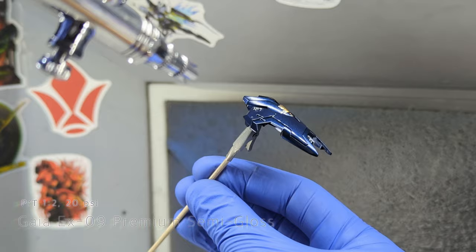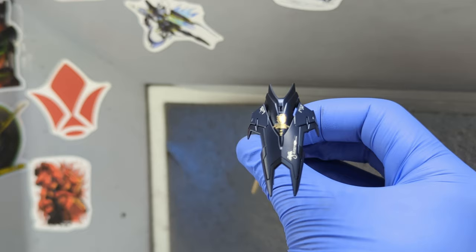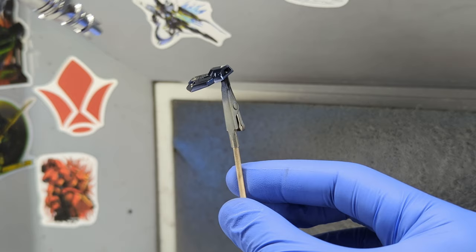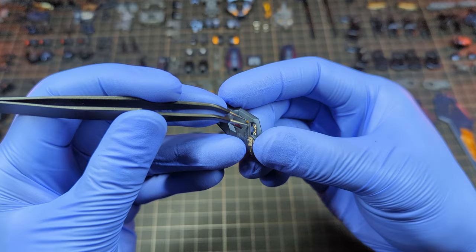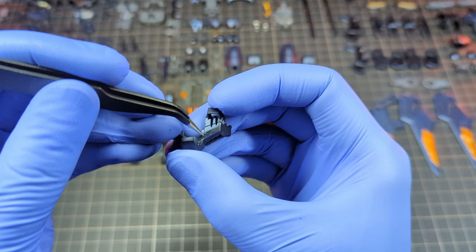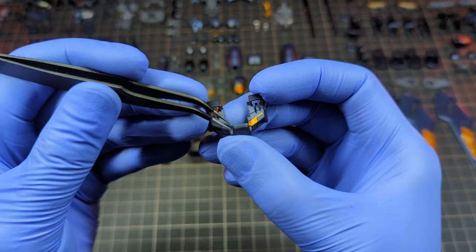And the final top coat of semi-gloss to seal everything. You can see that the Prism Blue Black looks more blue as more light hits it and more black in other angles, which I thought was perfect for this mobile suit. Unmasking reveals the steel-glossy psycho frame sections, which is a good contrast to the dark semi-gloss color of the build.